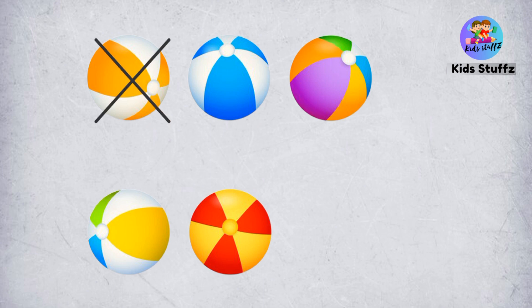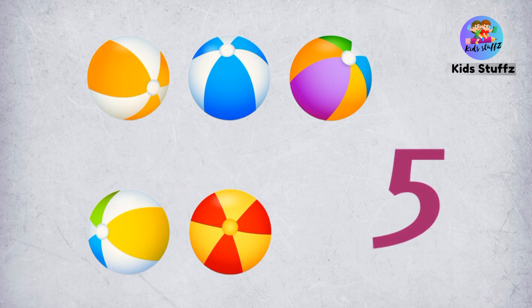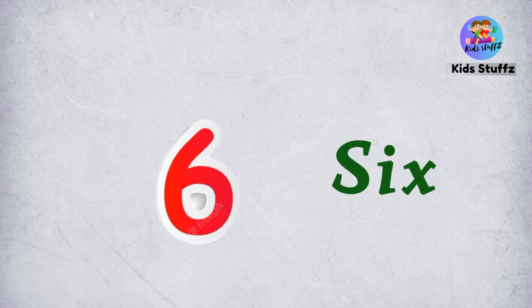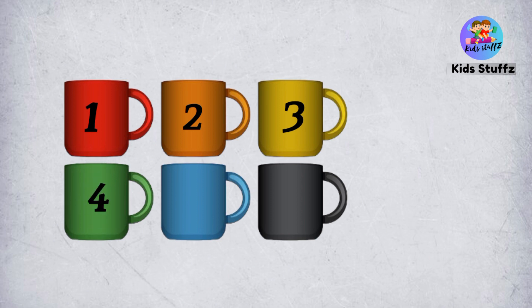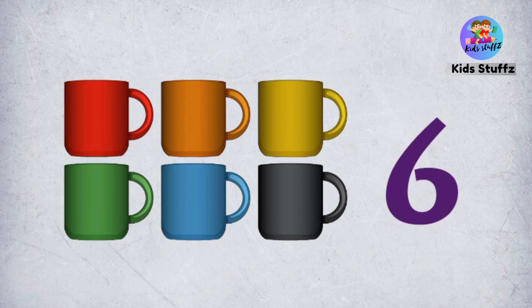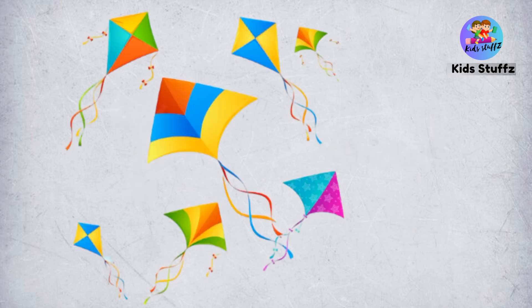5 — these are balls, there are 5 balls. 1, 2, 3, 4, 5 — five balls. 6 — these are cups, there are 6 cups here. 1, 2, 3, 4, 5, 6 — six cups.